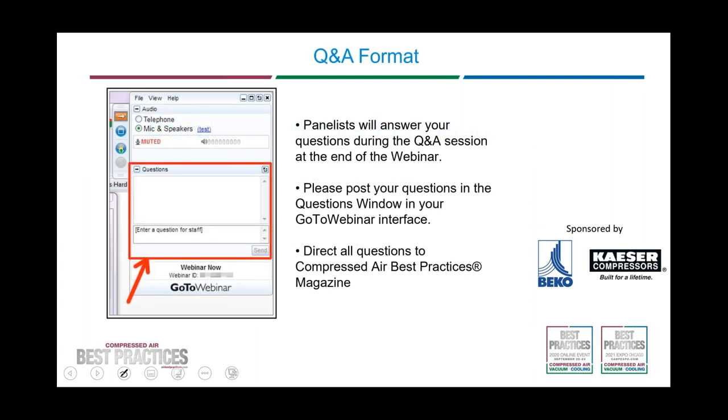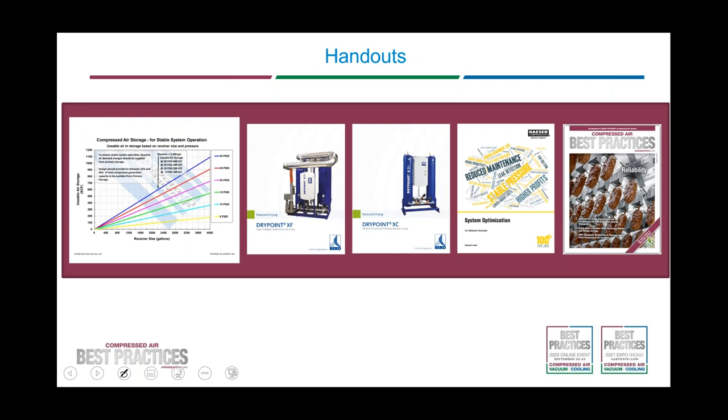I'd also like to quickly go over our Q&A format, which will take place at the end of the session. Please use your question window to submit questions and direct them to CompressAir Best Practices Magazine. If we do not get to your question during the allotted time, we will follow up personally with an email. We also have some handouts available for all attendees: Tom Tirano has provided a compressed air storage chart, Baeco Technologies has provided two desiccant dryer brochures, Kaser Compressors has provided a handout on system optimization, and handouts will also include the August issue of CompressAir Best Practices Magazine.